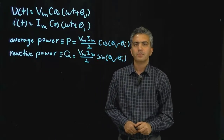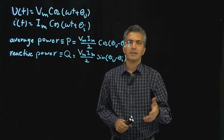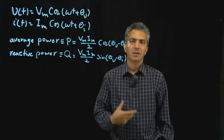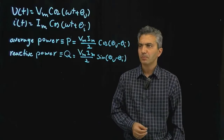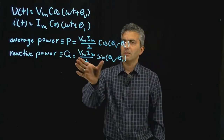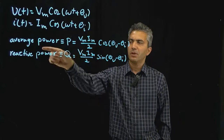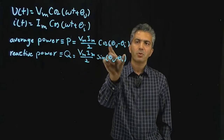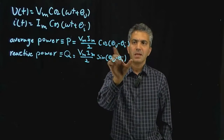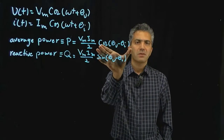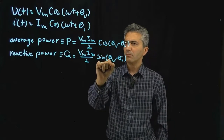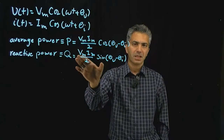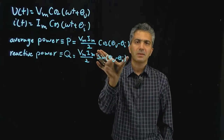Hello everyone. If you recall, last time we introduced average and reactive power in sinusoidal signals. The average power is the maximum voltage times the maximum current divided by 2, multiplied by the cosine of the phase difference. We call the cosine of the phase difference the power factor. Reactive power is the maximum voltage times maximum current divided by 2, times the sine of the phase difference.